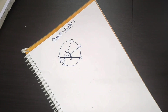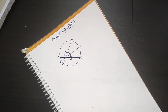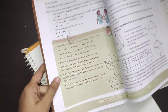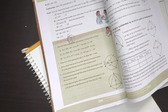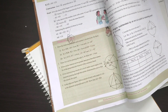Hi friends, welcome to my channel. This is 9th class math, exercise 12.3, the 4th sum and 5th sum. Here is the 4th sum: if two intersecting chords of a circle make equal angles with the diameter passing through their point of intersection, prove that the chords are equal.